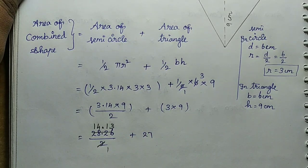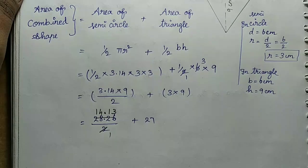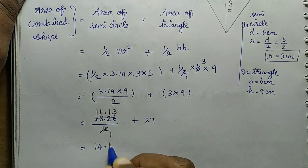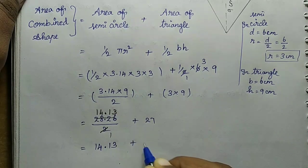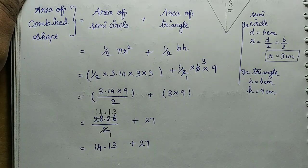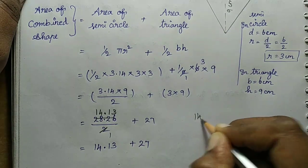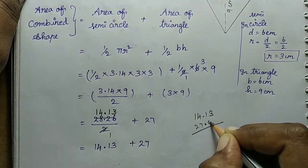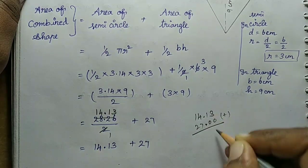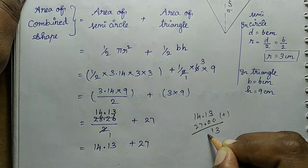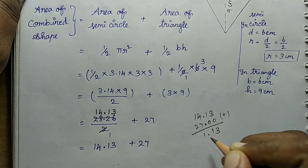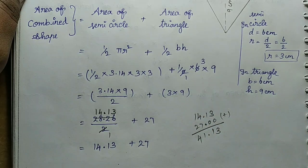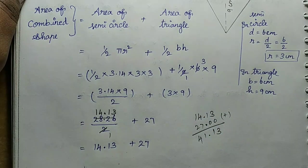Plus 9 threes are 27. Now add these: 14.13 plus 27. We add them with the decimal place aligned, so 0 here. Adding: 3, 1, point, 1, 1. Carry 1, then 2, 3, 4. This gives 41.13.